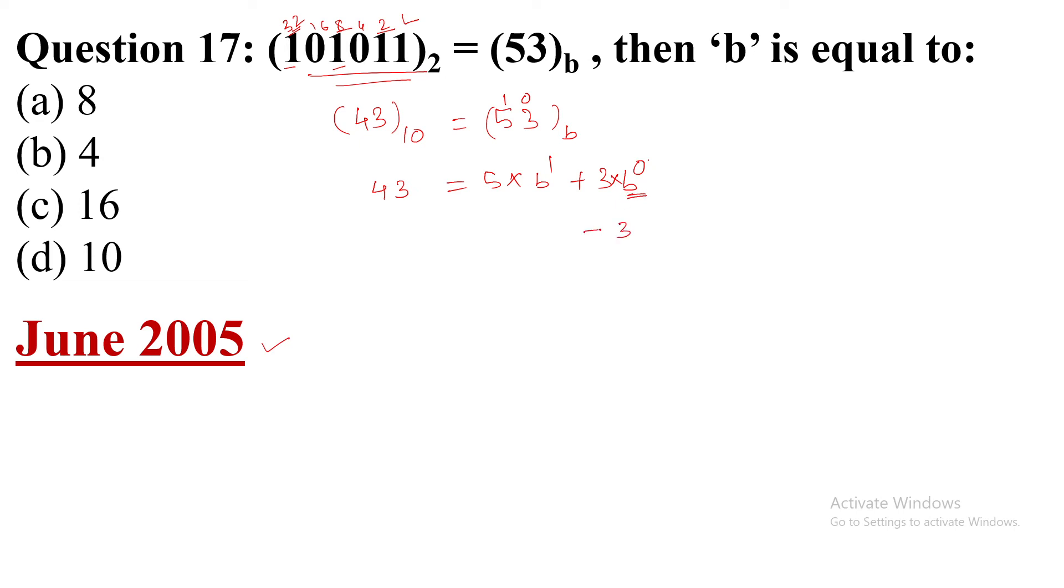So 3 times 1 is 3 plus 5b equals 43. So then this 3 will come to the right side.